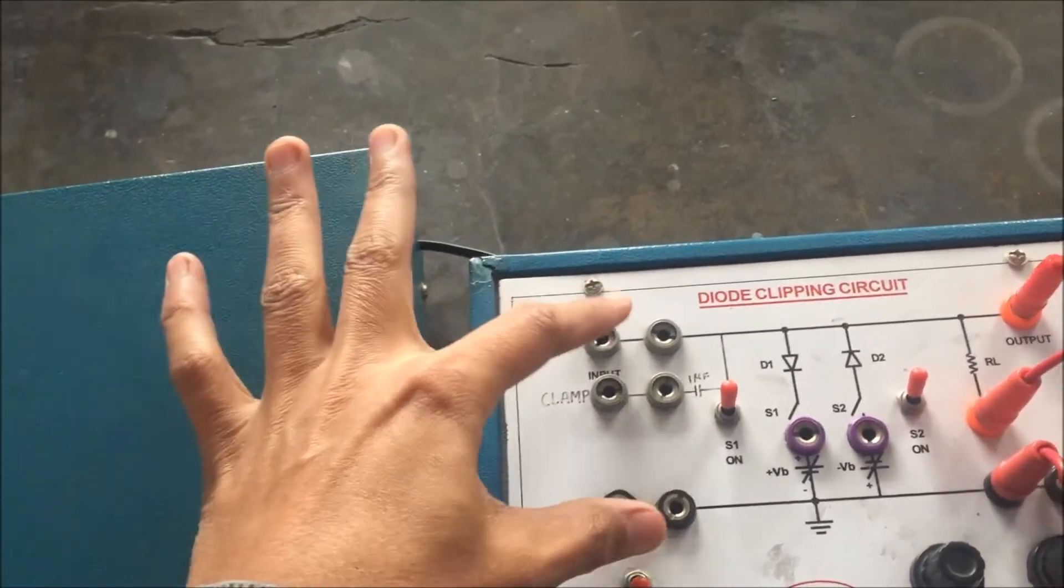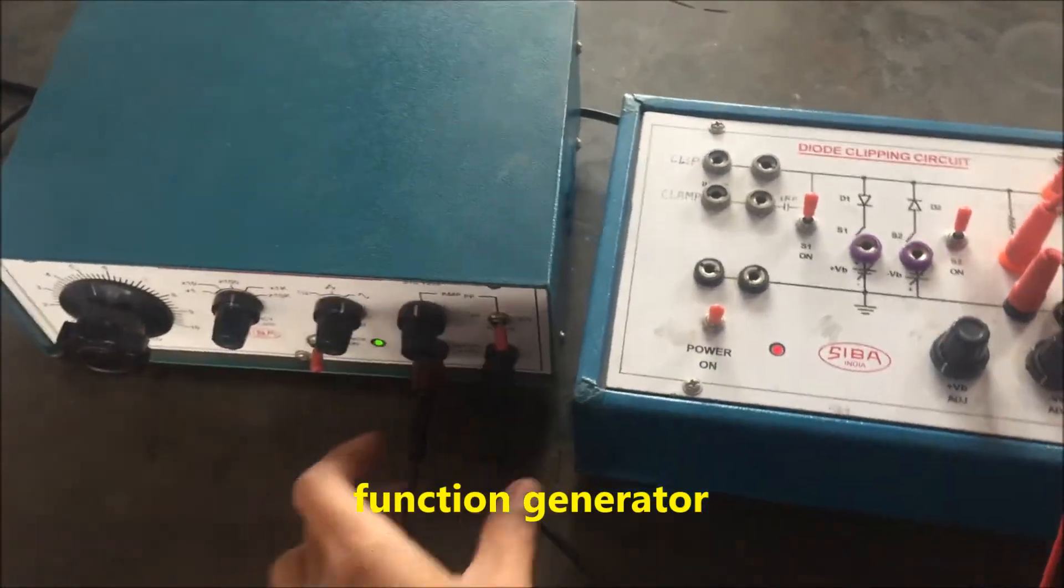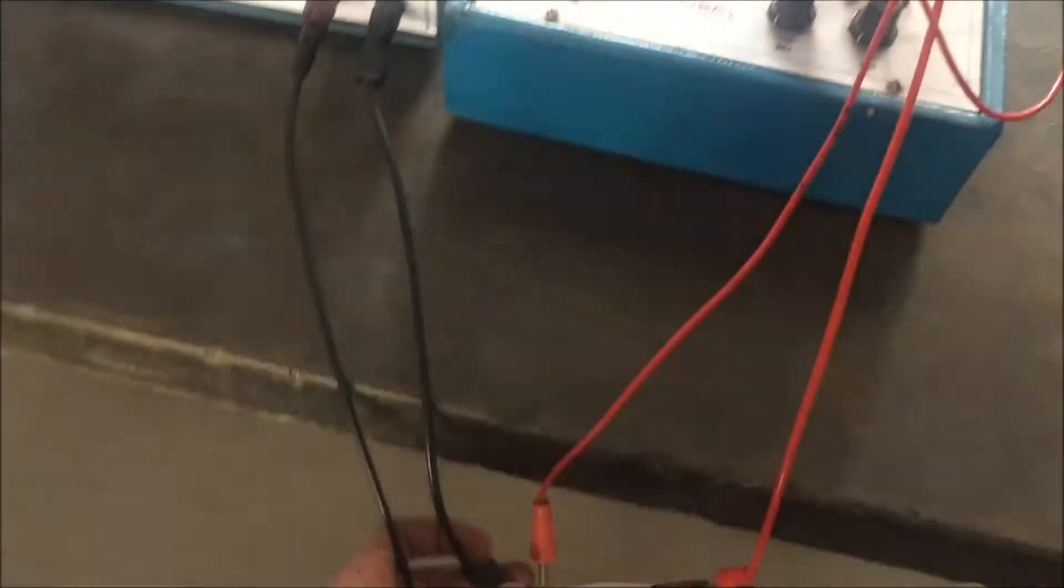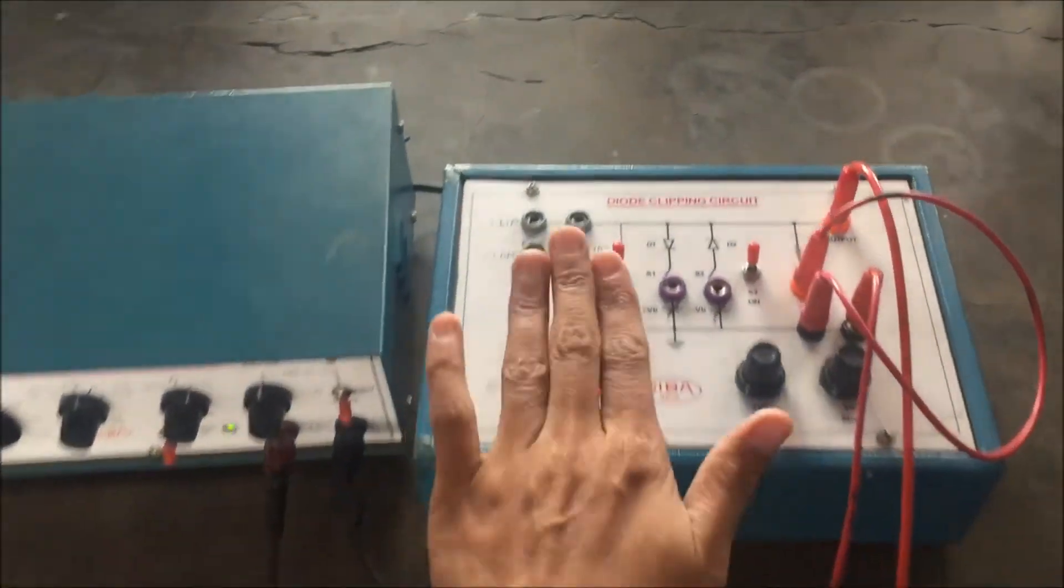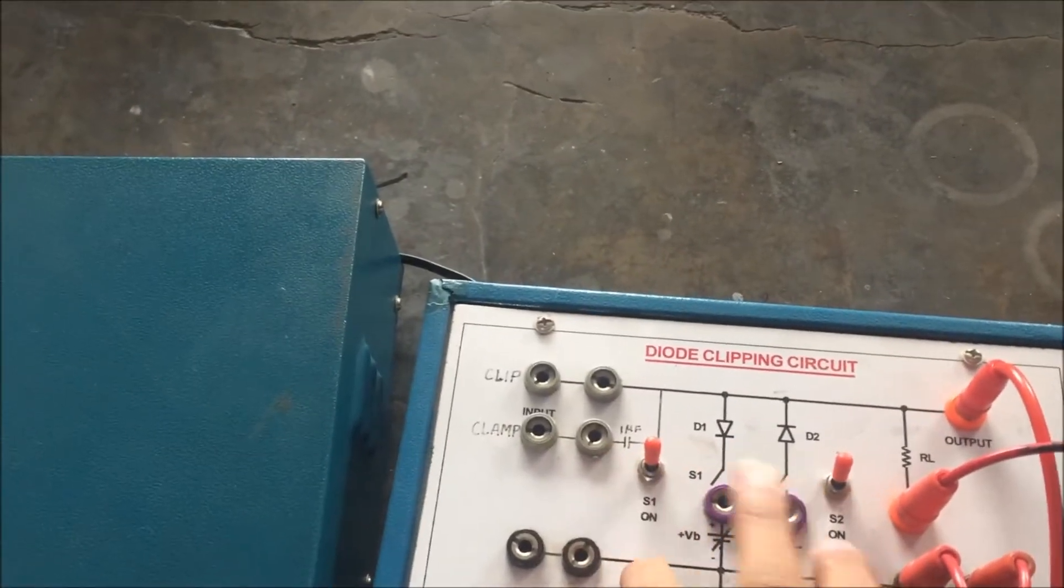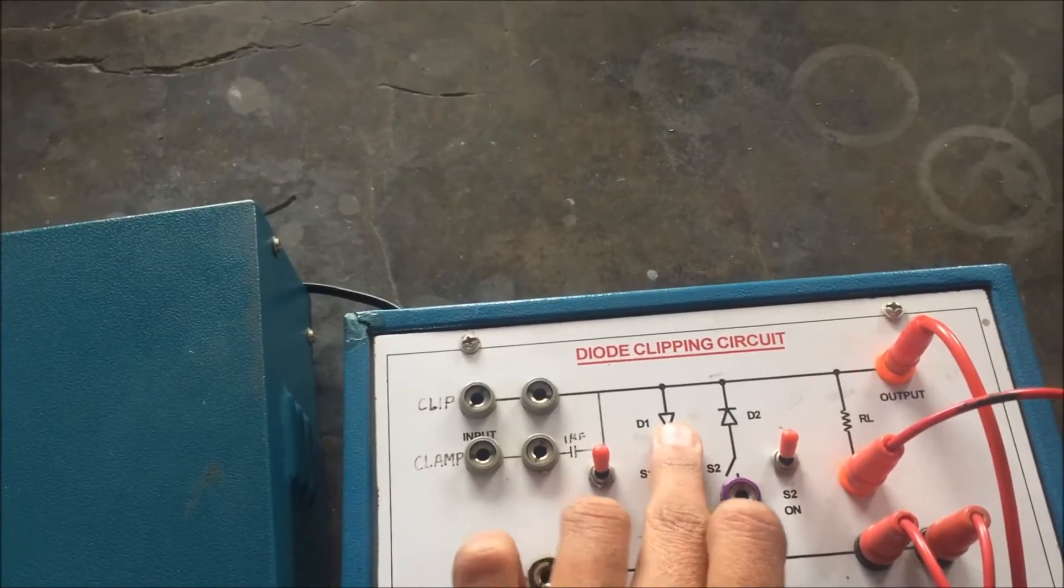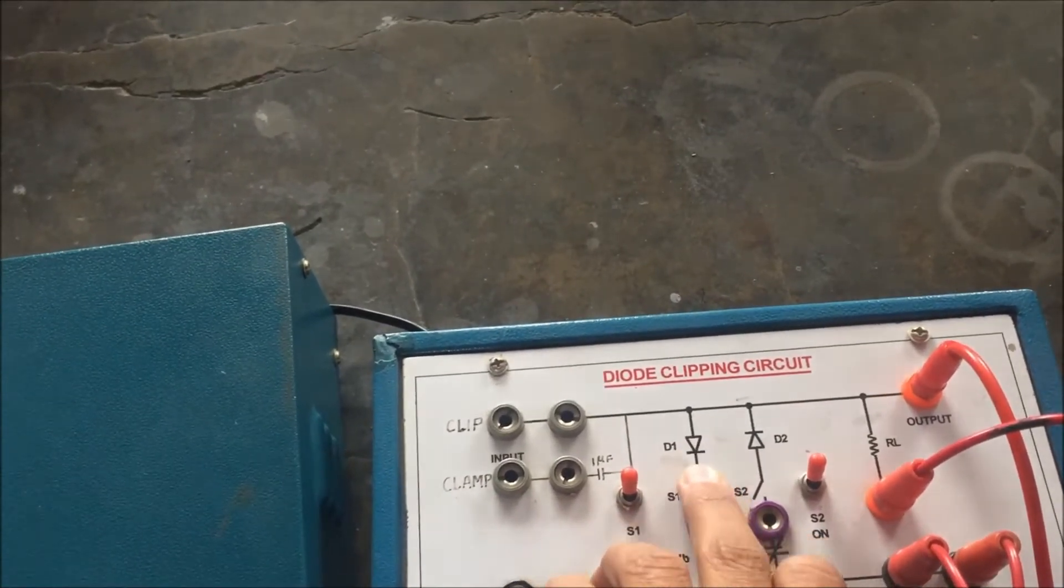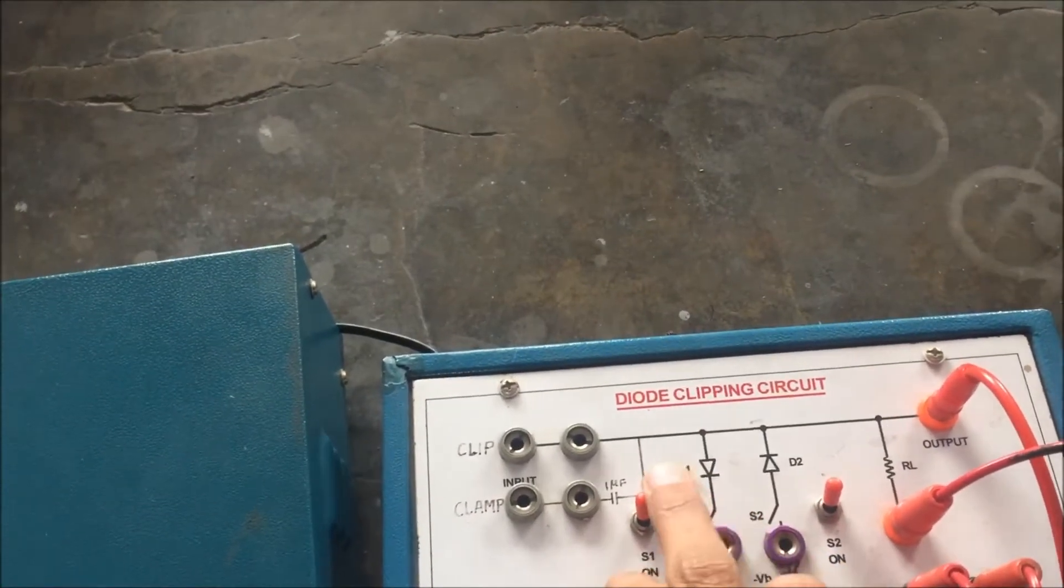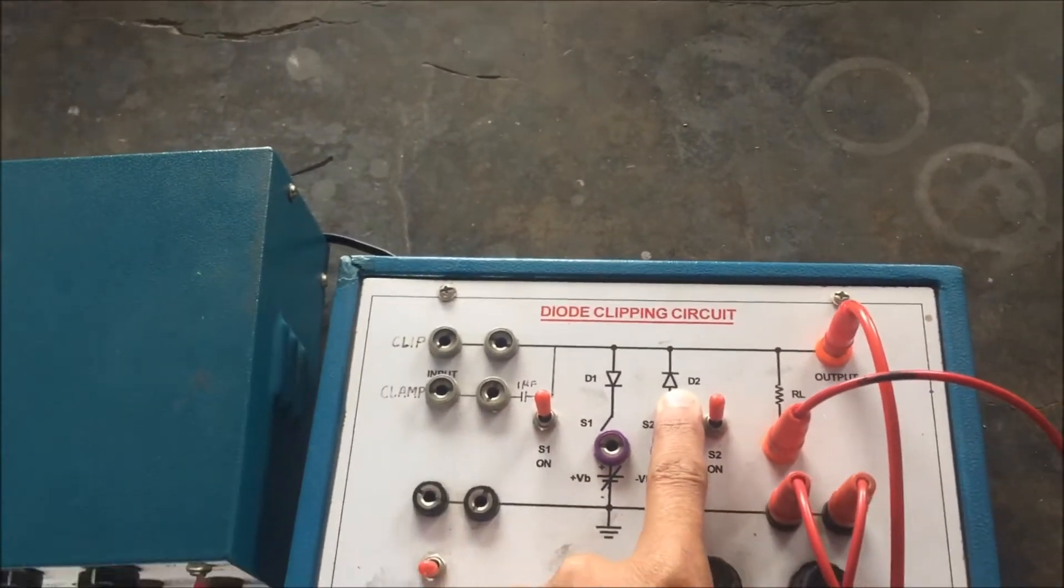So this is the output which will come from the frequency generator. From here we will give the output. Then you can use the diodes. If I will use the diodes, this is the P side and this is the N side. So we will use the positive clipper. If we use this, this is the negative clipper.